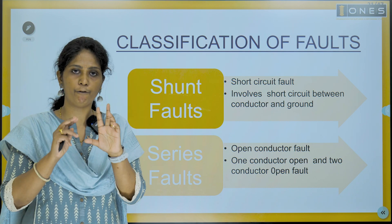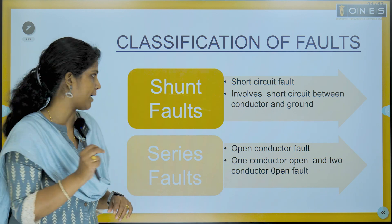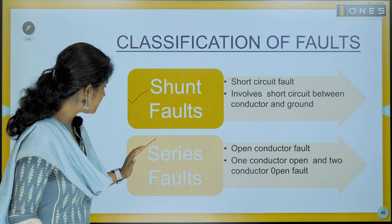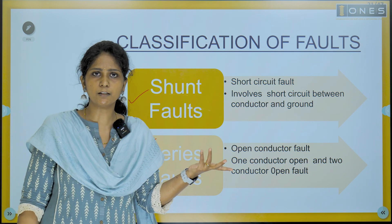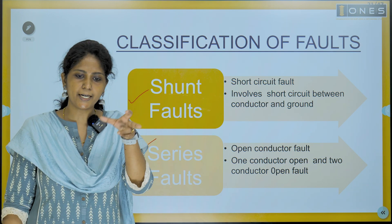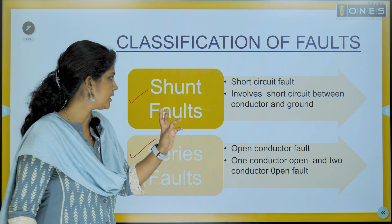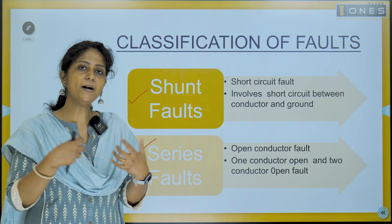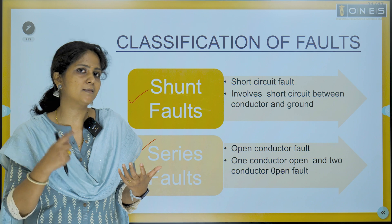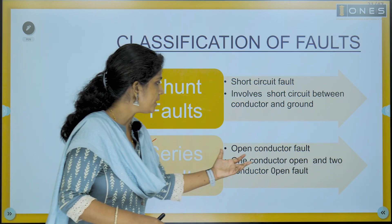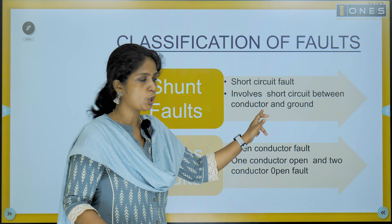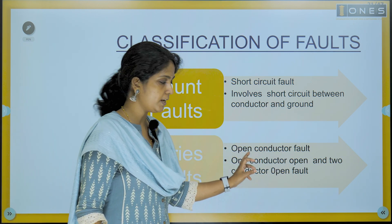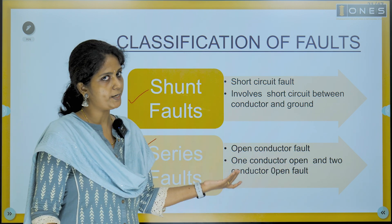Faults are broadly divided into two major types: shunt faults and series faults. Shunt faults are nothing but short circuit faults, and series faults are nothing but open circuit faults. Short circuit faults involve a short circuit between a conductor and the ground, or between two or more conductors. Series faults are open conductor faults involving one conductor open or two conductors open.